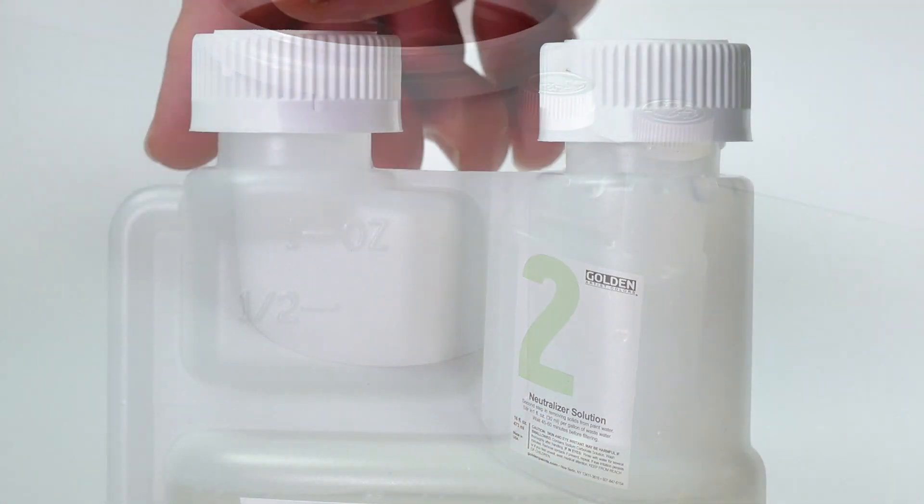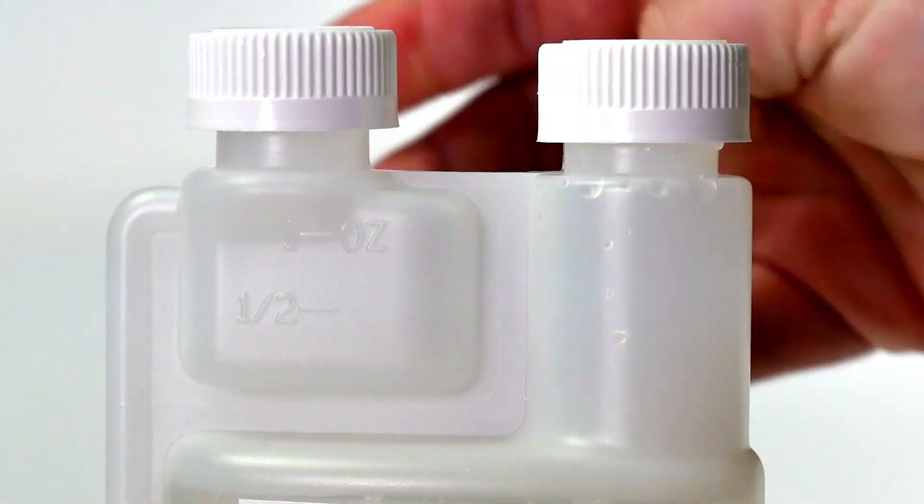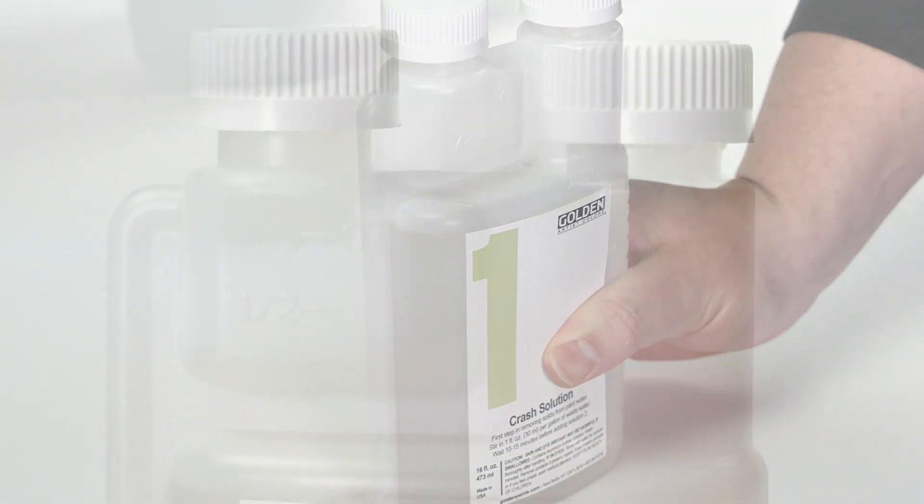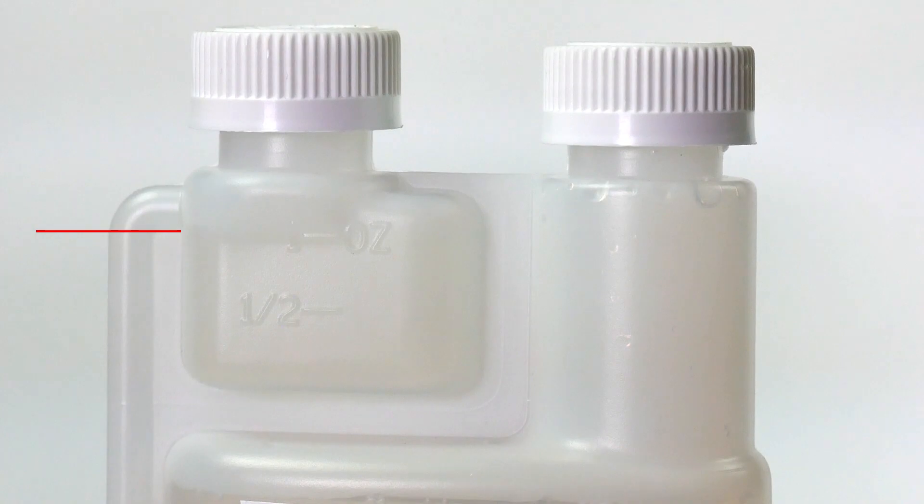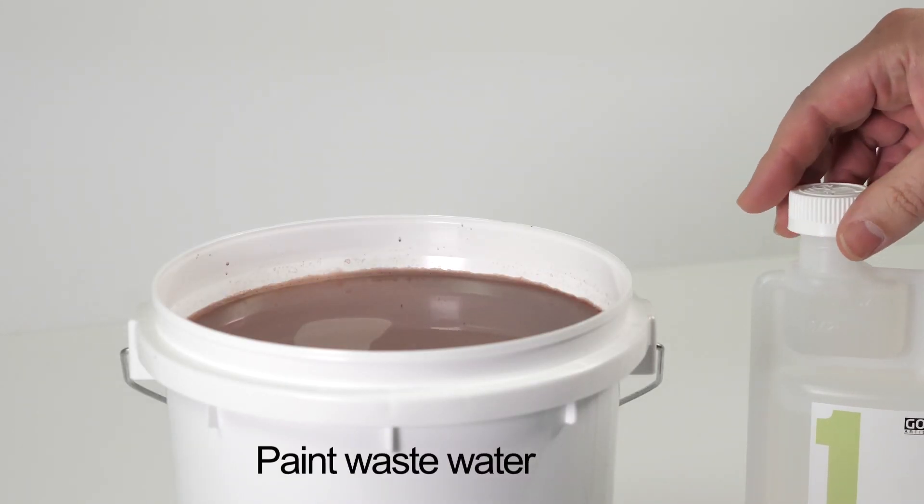Take solution one and loosen the left lid on the side with small measuring reservoir. Squeeze the bottom of the bottle to measure one ounce of solution into the reservoir. Fully remove the lid and pour the measured amount into your wastewater.